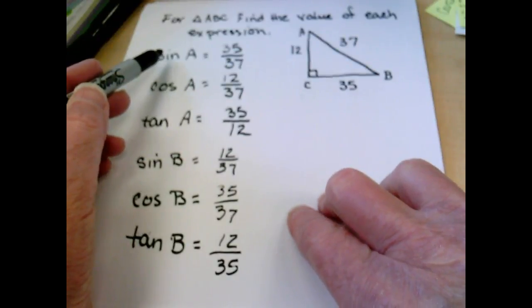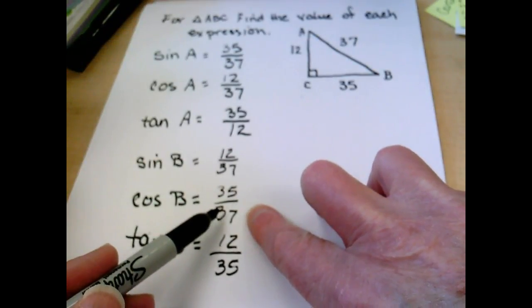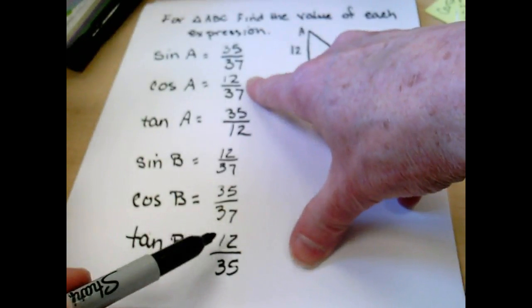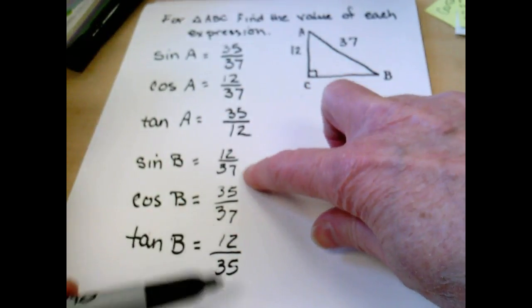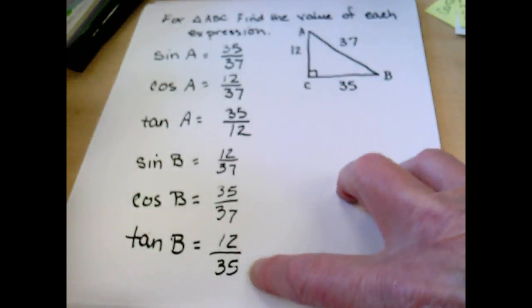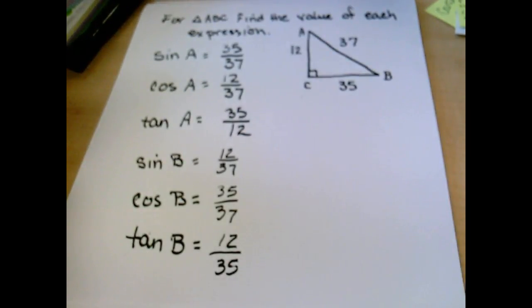And if you look at your numbers, the sine of A is the same number as cosine of B. Cosine of A is the same as sine of B. Tangent are the inverse of each other.